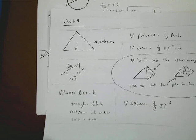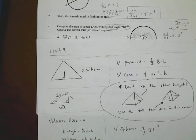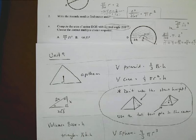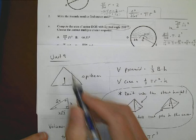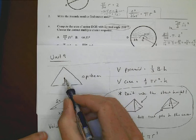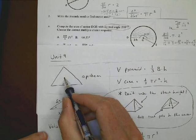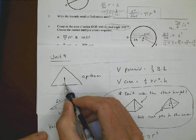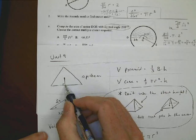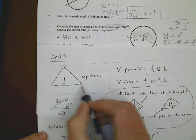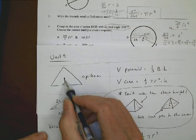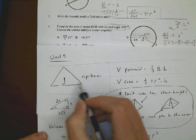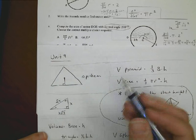A couple review things as we start. First is the apothem. The apothem is that distance from the center point of your shape that forms a right angle when you draw a line out to one of the edges of your sides. You have to be able to use that to find different things.